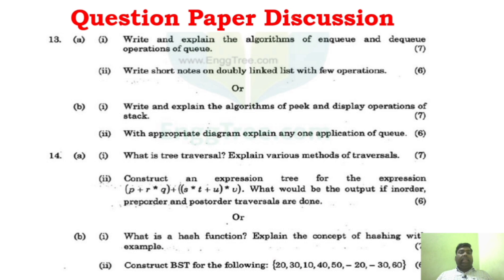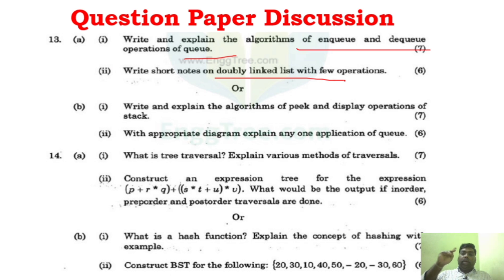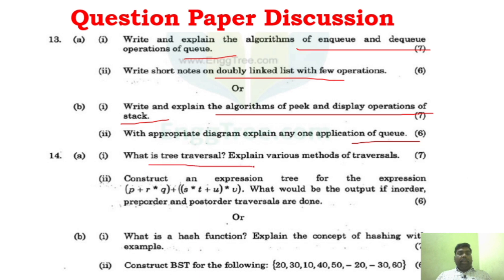For Part B questions, write and explain the algorithm of enqueue and dequeue operations for queues. You can also see doubly linked list questions. Unit 3 is going to have split-up marks questions. You should be able to write and explain stack and queue questions and get marks. For Unit 4, tree traversal is an important question. Construct an expression tree for a particular expression. Hash function and binary search tree problems are also important - construct a binary search tree for given values.